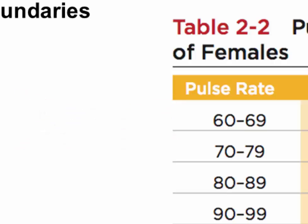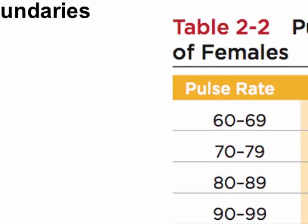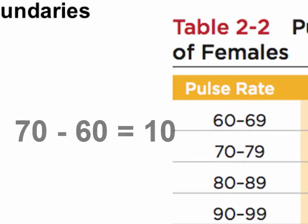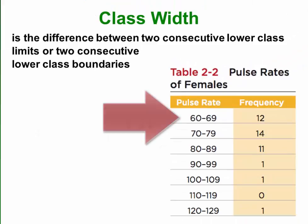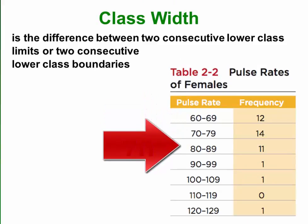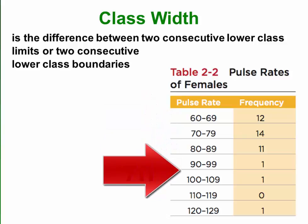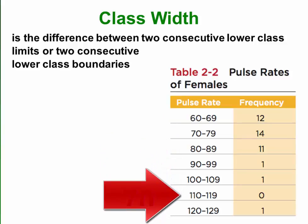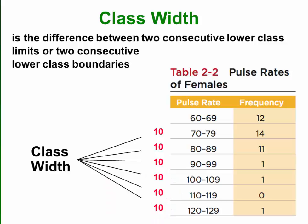To find the class width, we need to take the subtraction of two consecutive lower class limits or two consecutive lower class boundaries. So by subtracting 70 minus 60, we get the class width of 10 instead of 9. Notice the class width is consistent throughout the frequency table — subtract any two consecutive class limits and you get 10. So the class width in this case is 10.